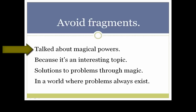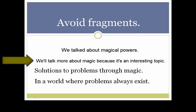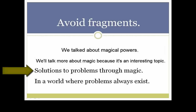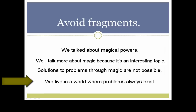Some sentences are missing a main clause. For example, we could correct one by saying, "We talked about magical powers." Another could become: "We'll talk more about magic because it's an interesting topic." One sentence is missing a verb — we could correct it to say, "We live in a world where problems always exist."